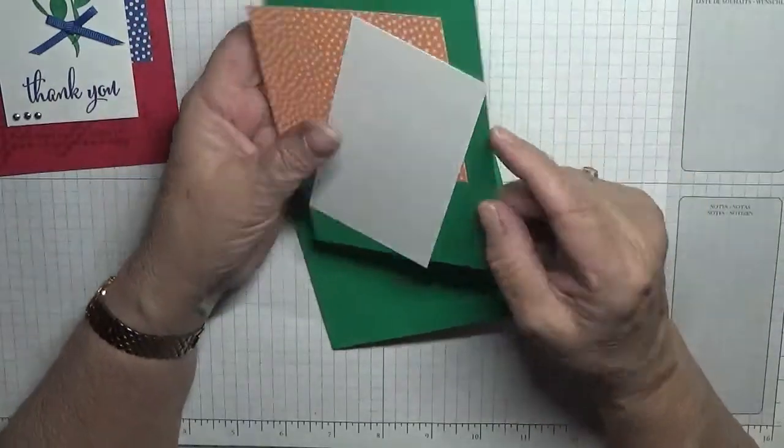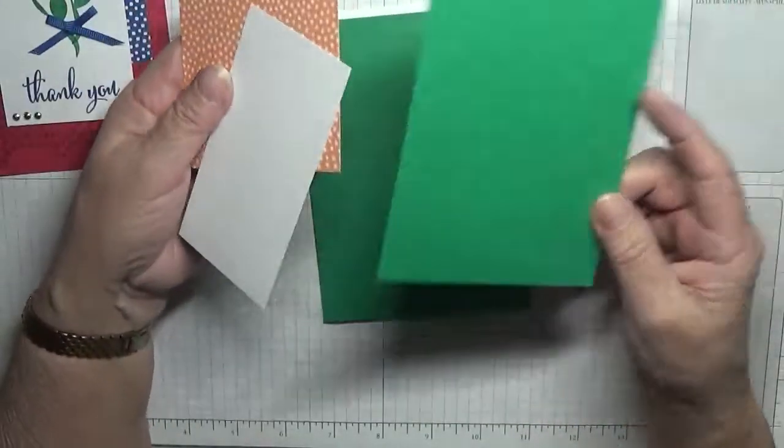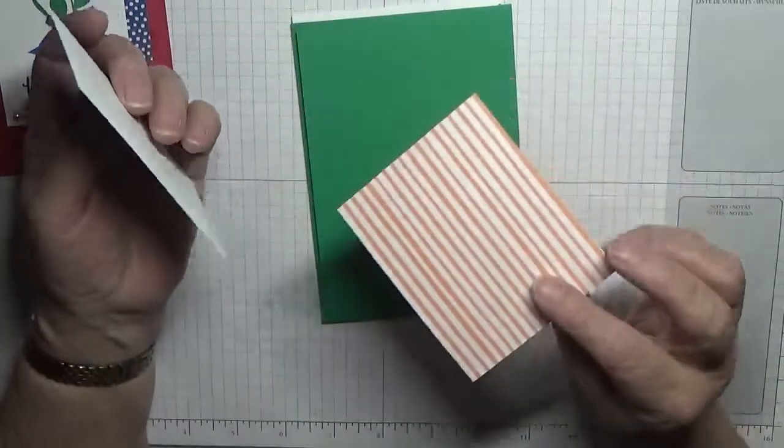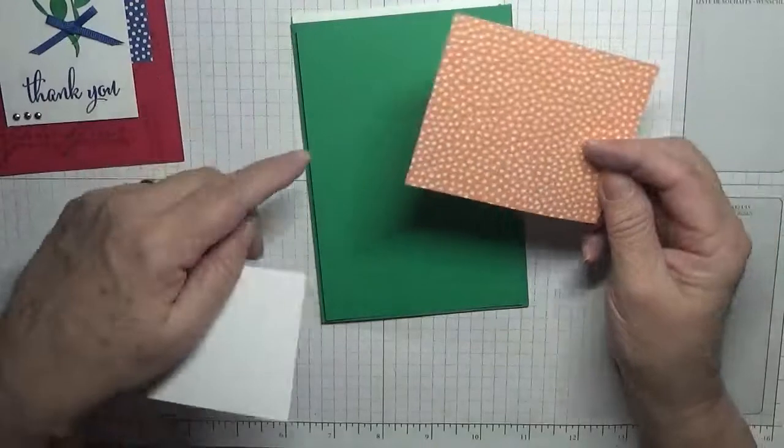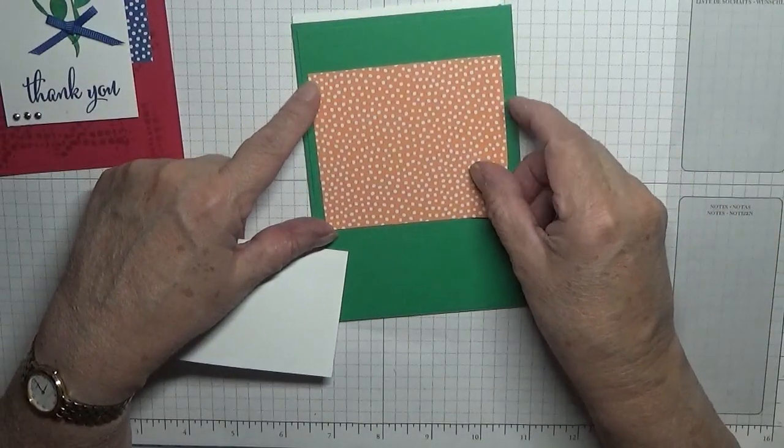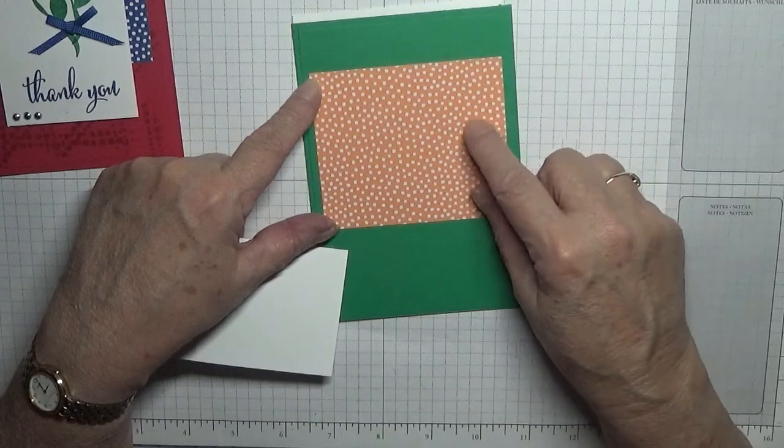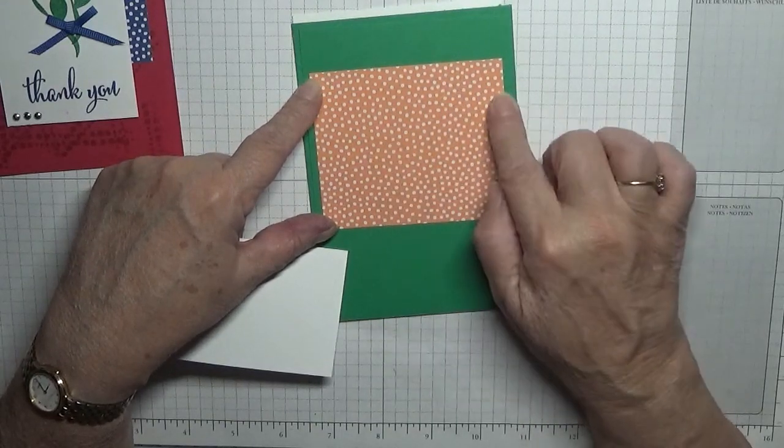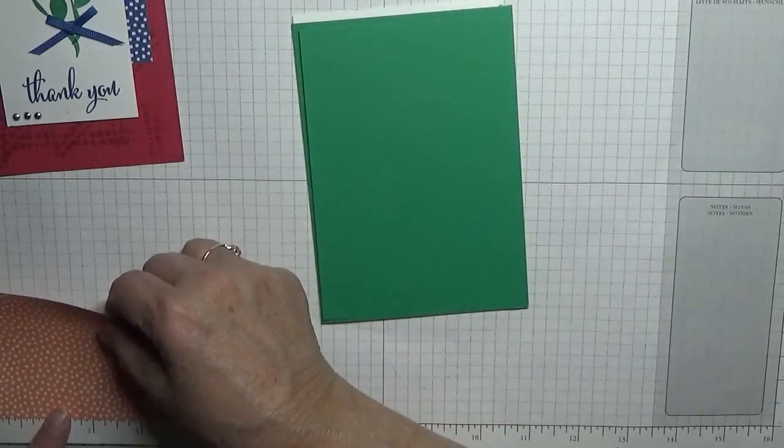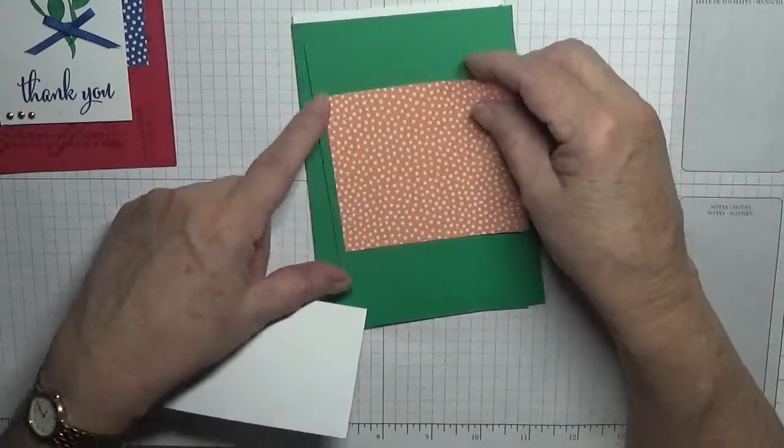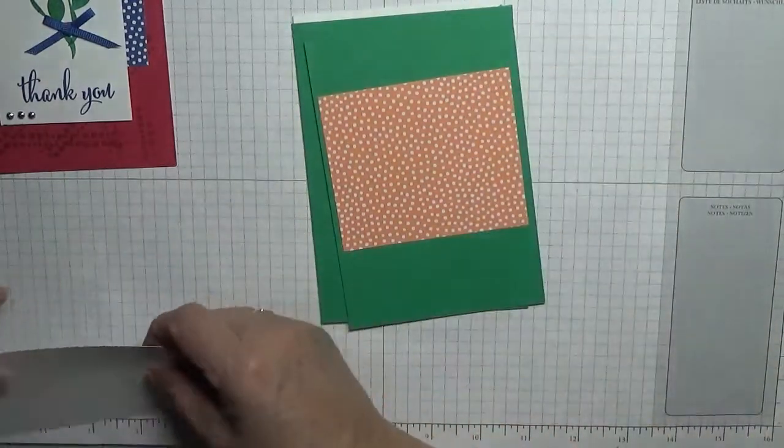I have a piece of Call Me Clover cardstock at 5 and 5/8 by 3 and 7/8 for the top. I have a bit of the 2018-19 Designer Series Paper, and I have got Grapefruit Grove here that measures 3 and a half by 2 and 3/4.